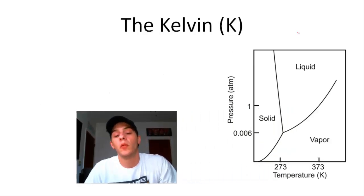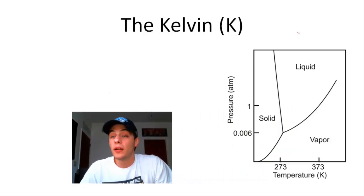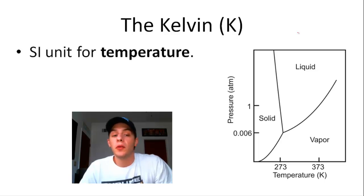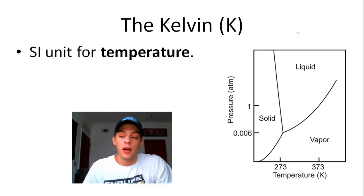So the next SI unit that I'm going to be talking about is the Kelvin. And the Kelvin is the SI unit for temperature. So when I say temperature, I'm talking about a measure of the average kinetic energy of the molecules within the sample. So if object A has a higher temperature than object B, then you can say that the molecules on average in object A are moving around faster than they are in B.